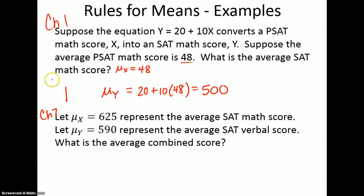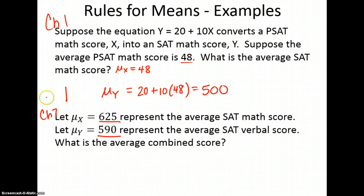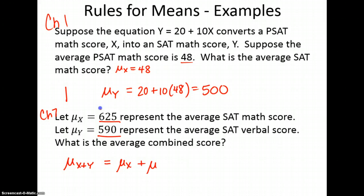Chapter 7 introduces two different random variables. One is the average SAT math score and the other is the average SAT verbal score. What is the average of the combined score? That's just going to be the mean of X plus the mean of Y, which is 625 plus 590, which is 1215.